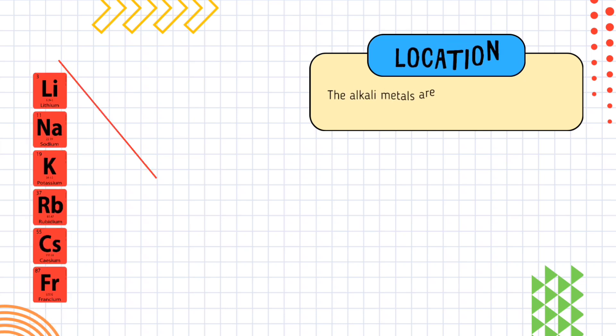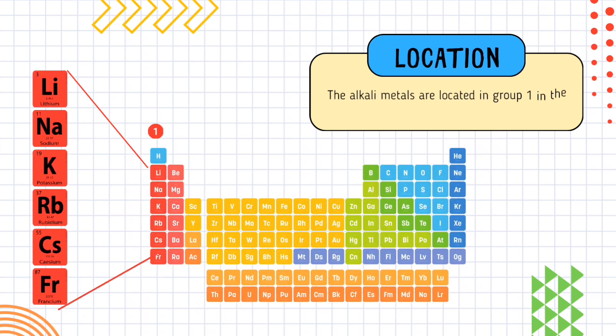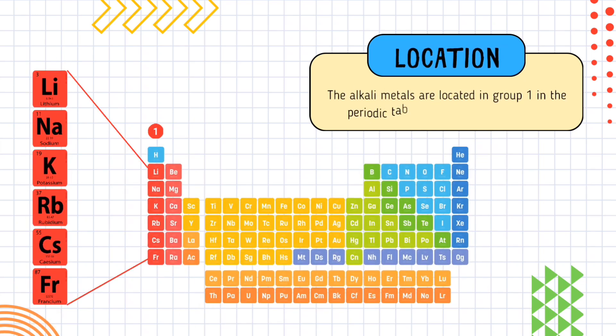First, we have to learn what are the alkali metals. Lithium, sodium, potassium, rubidium, cesium, and francium are known as alkali metals. They are located in the first group of the periodic table.